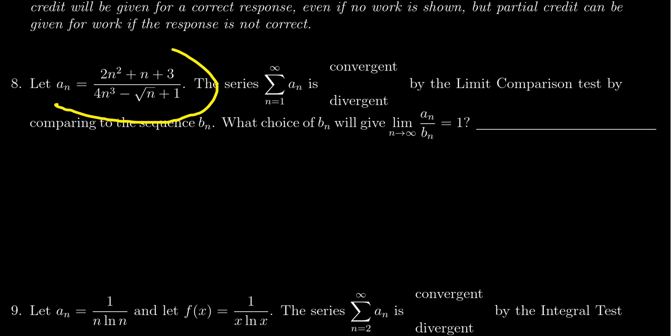We're given a sequence a sub n, which is given by 2n squared plus n plus 3 all over 4n cubed minus the square root of n plus 1.